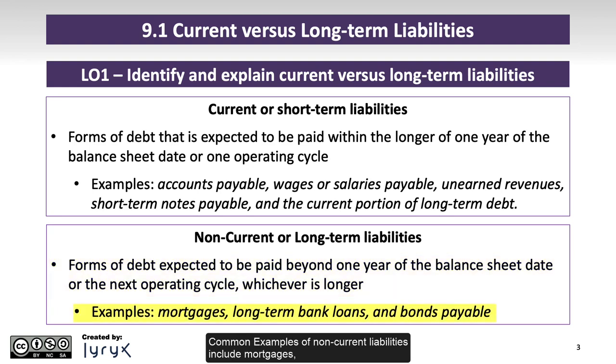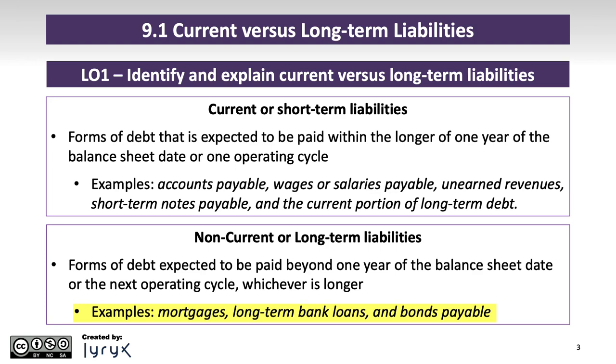Common examples of non-current liabilities include mortgages, long-term bank loans, and bonds payable.